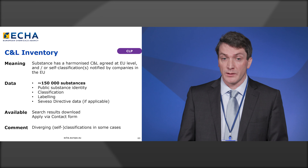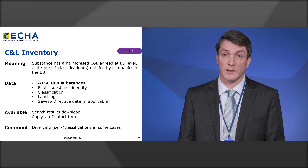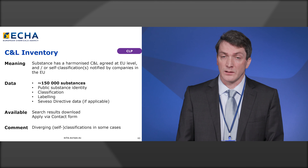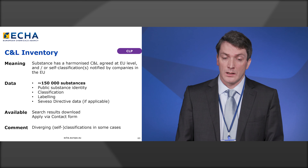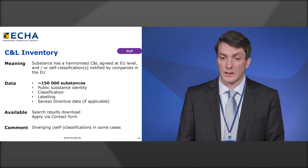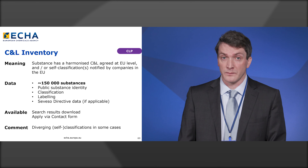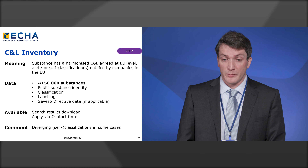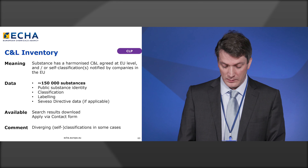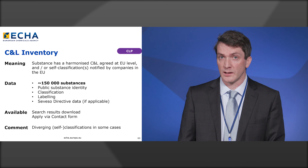Under the classification and labelling regulation, we have published the C&L inventory. Substances are included if they have a harmonized classification agreed at EU level or self-classifications notified by companies in the EU. As of today there are just under 150,000 substances. In the C&L inventory you'll find public substance identity, classification information, labelling information, harmonized classification if available, and Seveso Directive data for hazardous industrial chemicals. Search results can be downloaded, and note that where diverging self-classifications from industry are present, the harmonized classification and labelling always takes precedence.